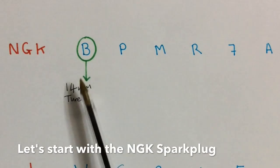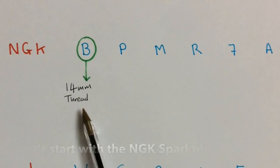So NGK's B code relates to a 14mm thread on the plug, the thread here.